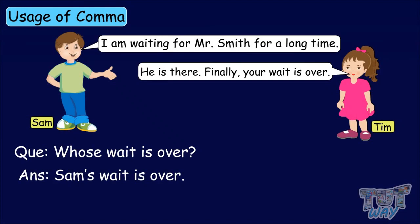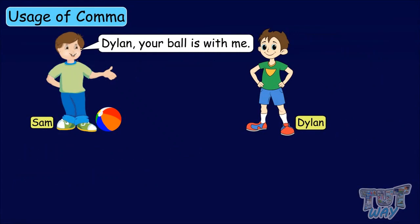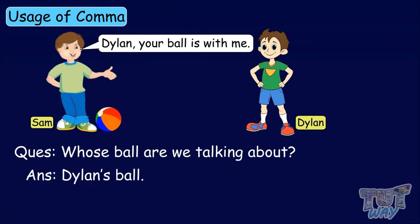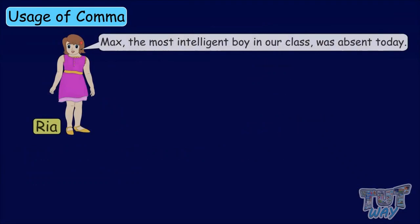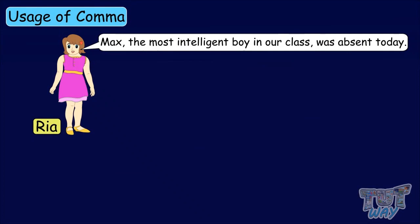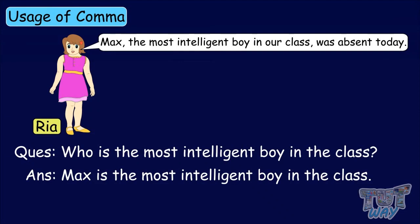Here we have another conversation. Dylan, your ball is with me. Whose ball are we talking about? Dylan's ball. Now here we have a sentence: Max, the most intelligent boy in our class, was absent today. Who was absent today? Max. Who is the most intelligent boy in the class? Max is the most intelligent boy in the class.